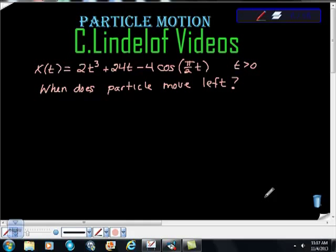Okay, AP Calculus particle motion, C. Lindelof Videos. We're given this position function x(t) = 2t³ + 24t - 4cos(πt/2) for t > 0, and we're asked when our particle moves left.